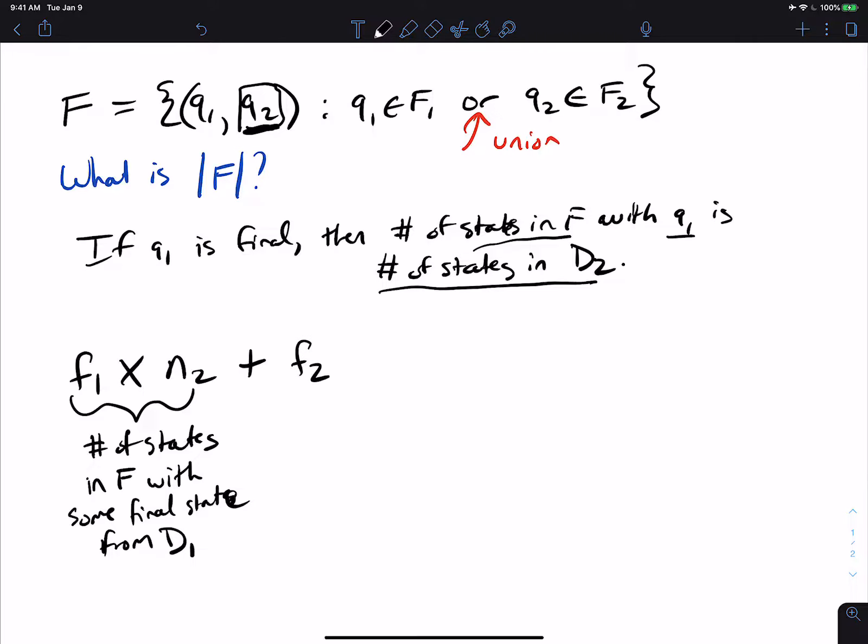and how many states are in the first machine, because we got to do the exact same type of calculation, but just switch the machines around. So F2 times N1. So these are the, let's see, it's the number of states in F.